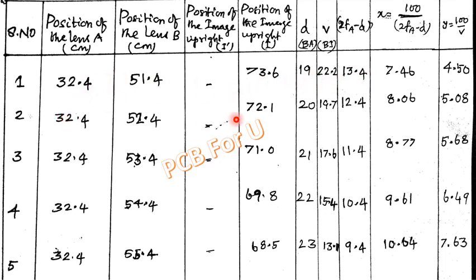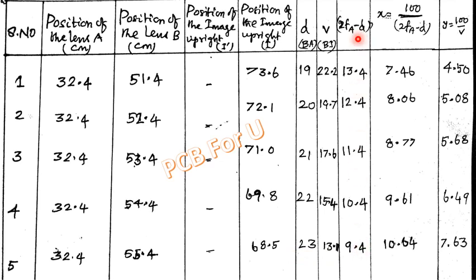Computing 2FM-D values: 32.4 minus 19 = 12.4; 32.4 minus 21 = 11.4; 32.4 minus 22 = 10.4; 32.4 minus 23 = 9.4.